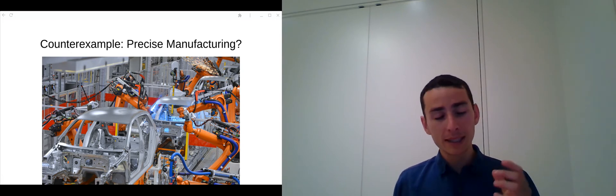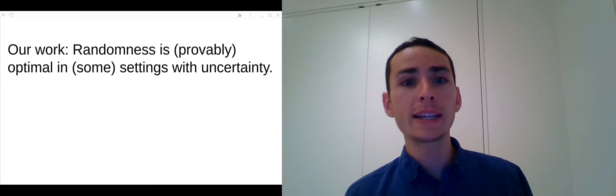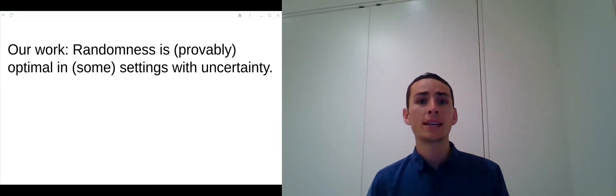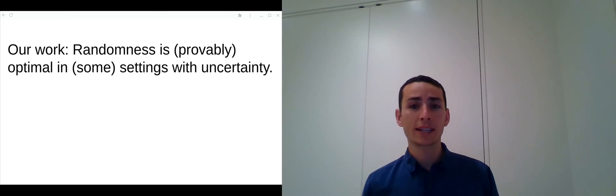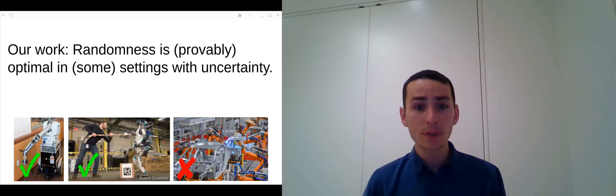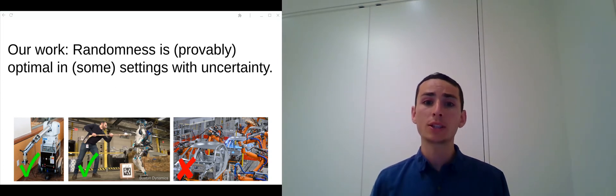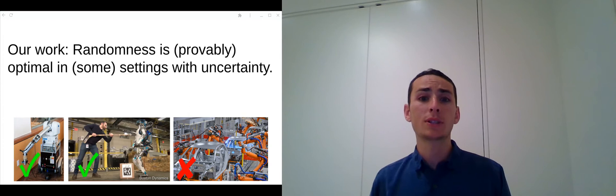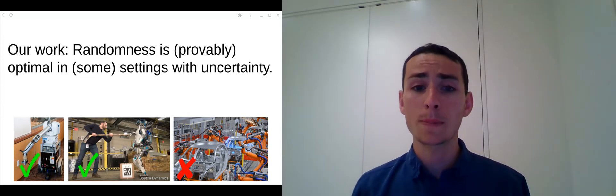So taking these three examples together, the core idea of our work is that randomness is good in some settings where we have uncertainty. This includes uncertainty in observations, uncertainty about the dynamics or reward function. But randomness won't be useful in settings where we want really precise control, where there's no uncertainty.